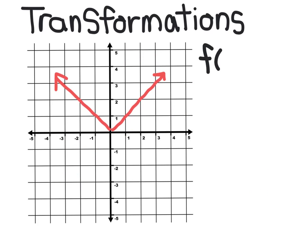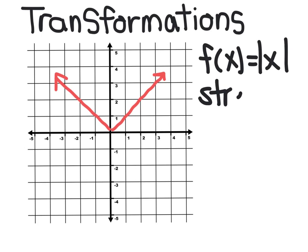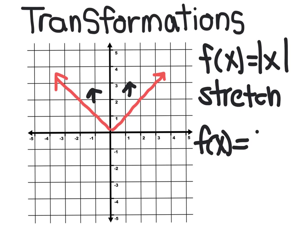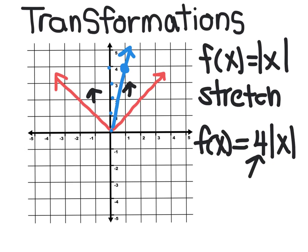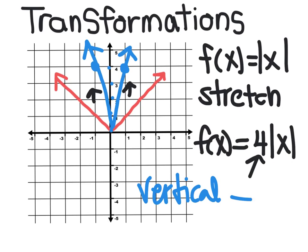For a stretch, starting with the parent function f of x equals the absolute value of x, imagine pulling the graph upward — stretching it makes it narrower. Changing the coefficient from 1 to 4 means instead of going over 1 up 1, you go over 1 up 4. Making the graph symmetric because it's an absolute value function produces a really steep V, which is a vertical stretch.